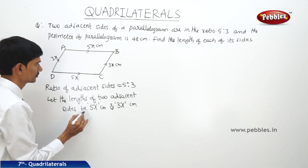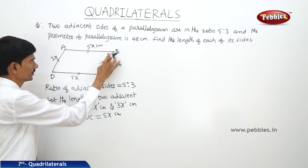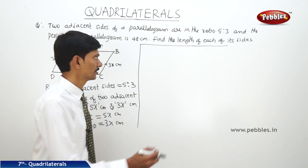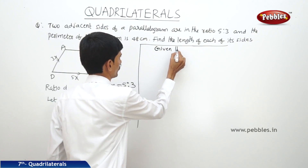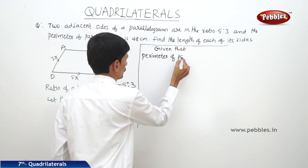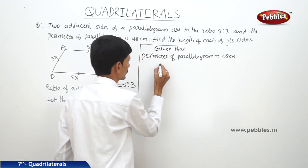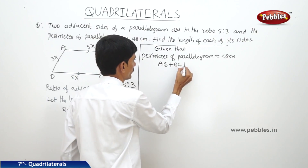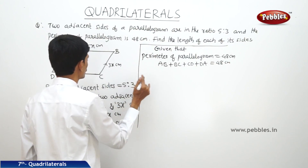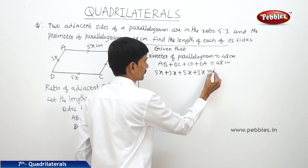AB equals DC equals 5x centimeters, and BC equals DA equals 3x centimeters. Given that the perimeter of the parallelogram equals 48 centimeters, so AB plus BC plus CD plus DA equals 48 centimeters — that is 5x plus 3x plus 5x plus 3x equals 48 centimeters.